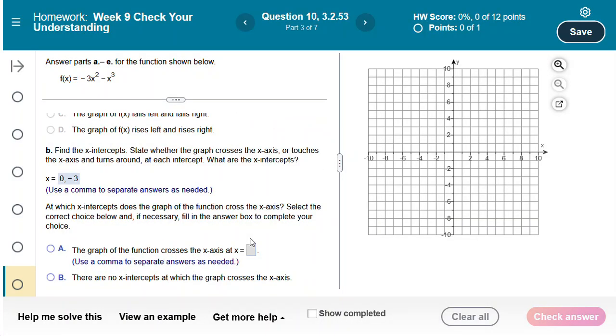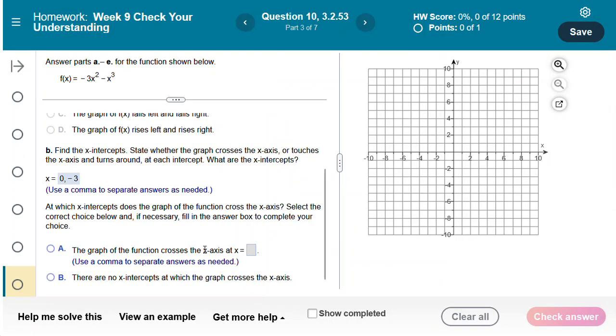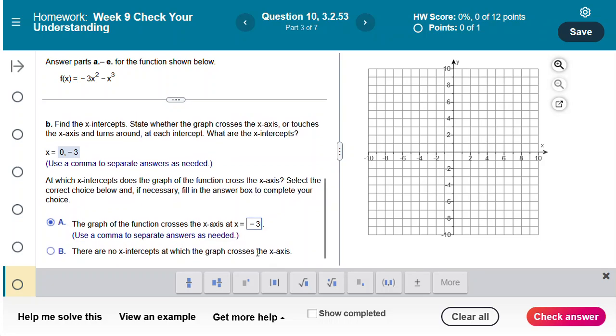Now the question is at which x-intercepts does the graph of the function cross the x-axis? I can see that it's crossing at negative 3. I'm going to choose answer choice A and type negative 3 into the box. If it did not cross anywhere and they were all touching and turning around I would choose answer choice B.